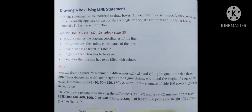The LINE statement can be modified to draw boxes. Specify the coordinates of the diagonally opposite corners of the rectangle or square, then add the letter B and optionally F. The syntax is: LINE (x1,y1)-(x2,y2), color code, BF. B signifies that a box has to be drawn; F signifies that the box has to be filled with color.